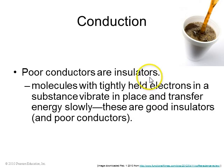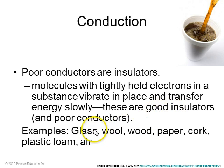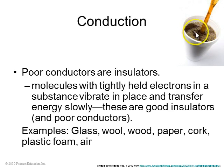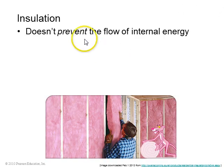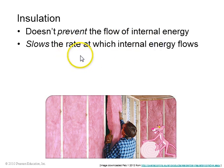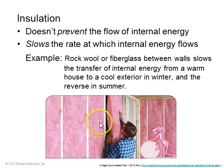Poor conductors are called insulators — substances in which electrons don't move freely. Good insulators include glass, wool, wood, paper, and cork. This styrofoam cup, for example, allows heat to flow very slowly from the coffee out into your hand. Insulation doesn't prevent the flow of internal thermal energy; it just slows the rate. Pink fiberglass insulation in walls reduces the rate that heat flows from the higher temperature side to the lower temperature side.